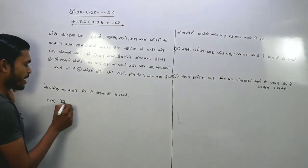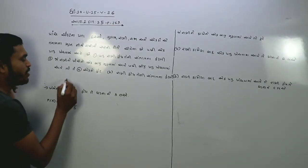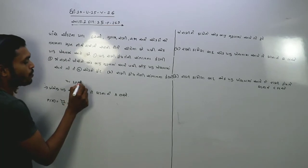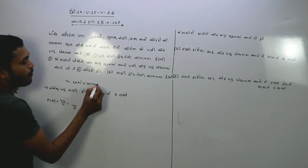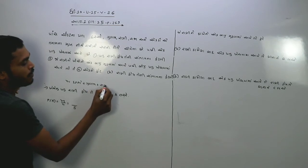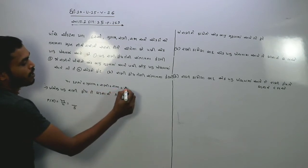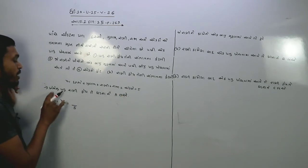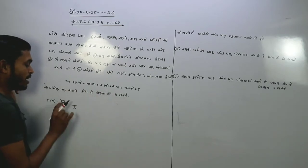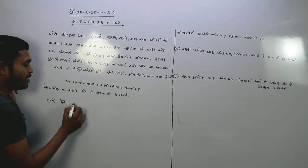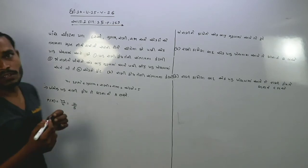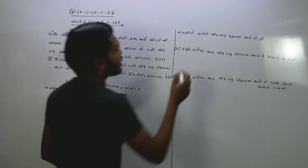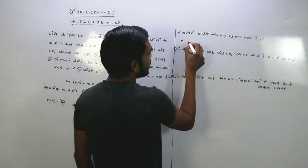ખેંચવામાં પત્તુ અલગ કાઢી ને મૂક્યુ. તો આ ગડી પત્તા: દસ્ત, ગુલામ, રાણી, રાજા, એક્કો – આમ કરીને કૂલ પાંચ થયા. તો આ ખેચેલું પત્તું રાણું – જો એ હોય, તો કૂલ પત્તા કેટલા?